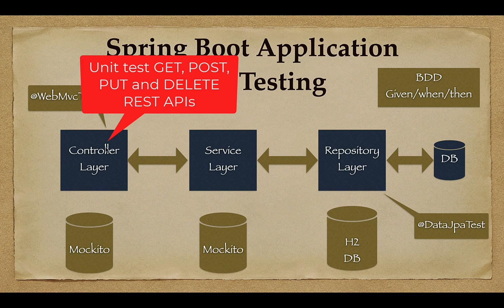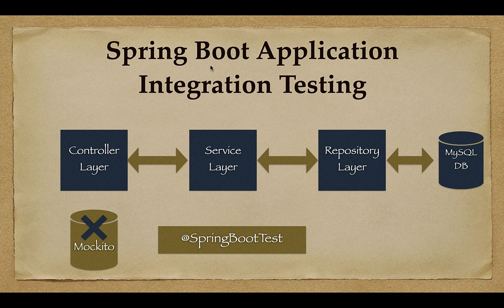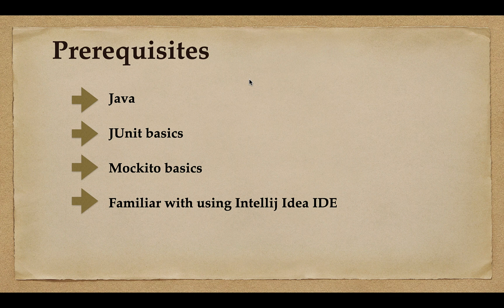After the service layer, we'll head over to unit testing controller layer components. You will learn how to unit test REST APIs — GET, POST, PUT, and DELETE. We're going to use Mockito's mock while unit testing the controller layer, because the controller layer depends on the service layer. We'll use the @WebMvcTest annotation for this. Later, you will also learn how to do integration testing across these different layers.